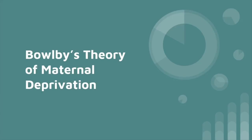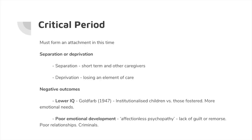Next is Bowlby's theory of maternal deprivation, which follows on from his evolutionary theory of attachment. It says the negative outcomes in the critical period could have a lasting effect. To recap: we must form an attachment within the critical period, which is up to about two years. Separation is when an attachment is formed within the critical period and then lost for a short time — maybe the mother goes away working for a couple of weeks. Deprivation is when an attachment is formed but then lost in the long term or more permanently — such as a family break-up where the child doesn't see one parent, or one of them dies.